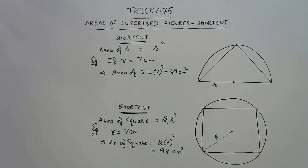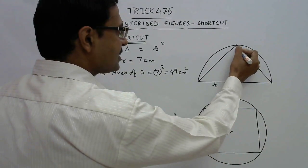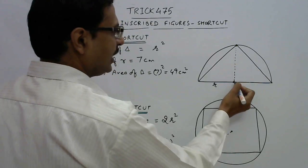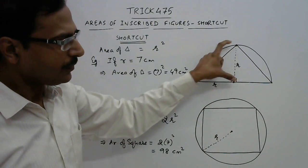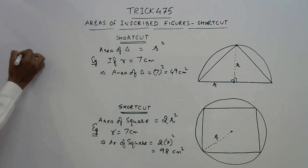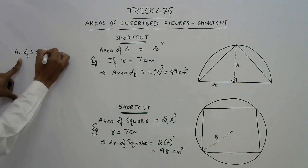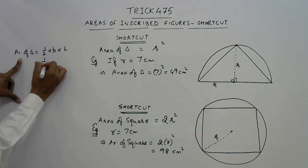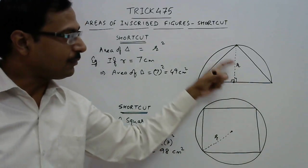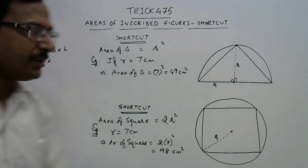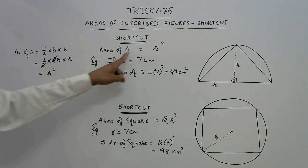Now let's justify how these formulas are obtained. In the semicircle figure, if you draw a line joining the center to the top point of the triangle, that line is also a radius. The general formula for area of a triangle is ½ × base × height. The base is r + r = 2r, and the height is r. So the area = ½ × 2r × r = r². That confirms the shortcut.